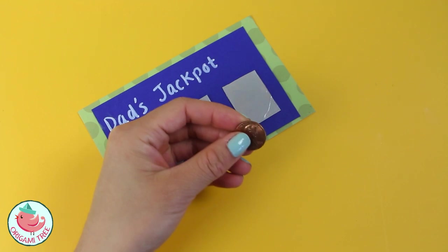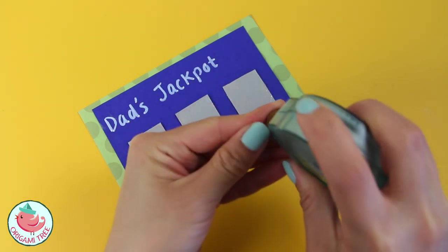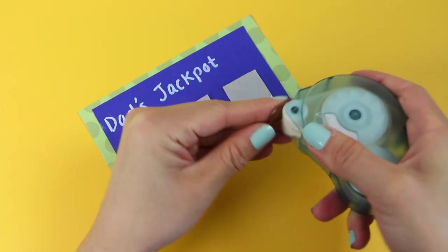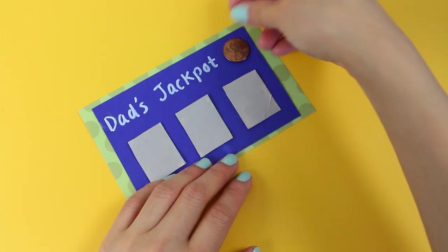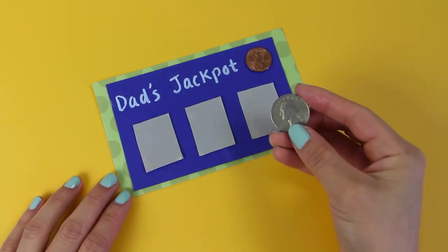And next I'm going to take a penny and put a glue dot at the back of the penny and then place it right next to the word Jackpot. And now finally you can scratch it off.